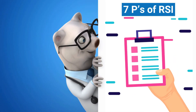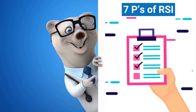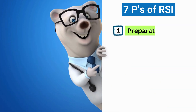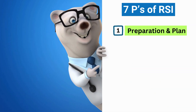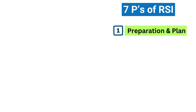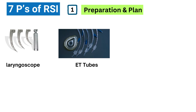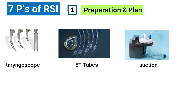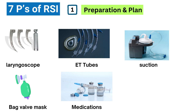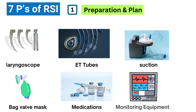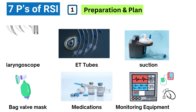We follow the 7 Ps — it's like a checklist to keep us on track. The first P is Preparation and Plan. This is where we get everything ready: the laryngoscope, different sizes of endotracheal tubes, suction, an oxygen supply, all the necessary medications — sedatives, paralytics, even reversal agents just in case — monitoring equipment, and, crucially, backup plans if the first attempt doesn't go as planned.